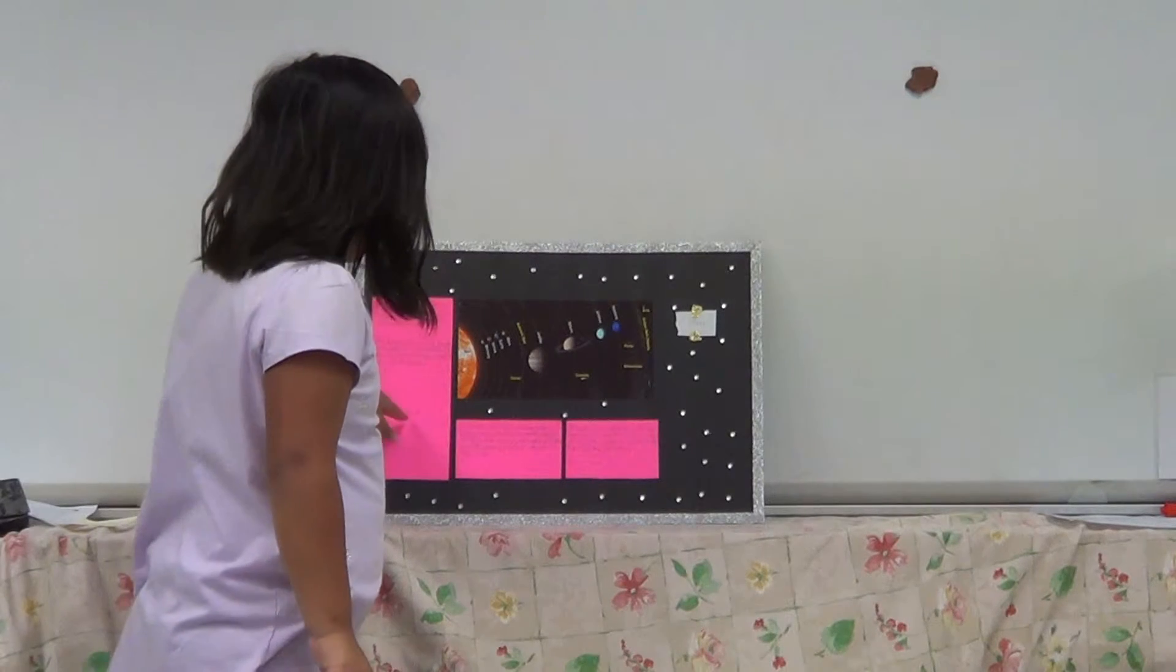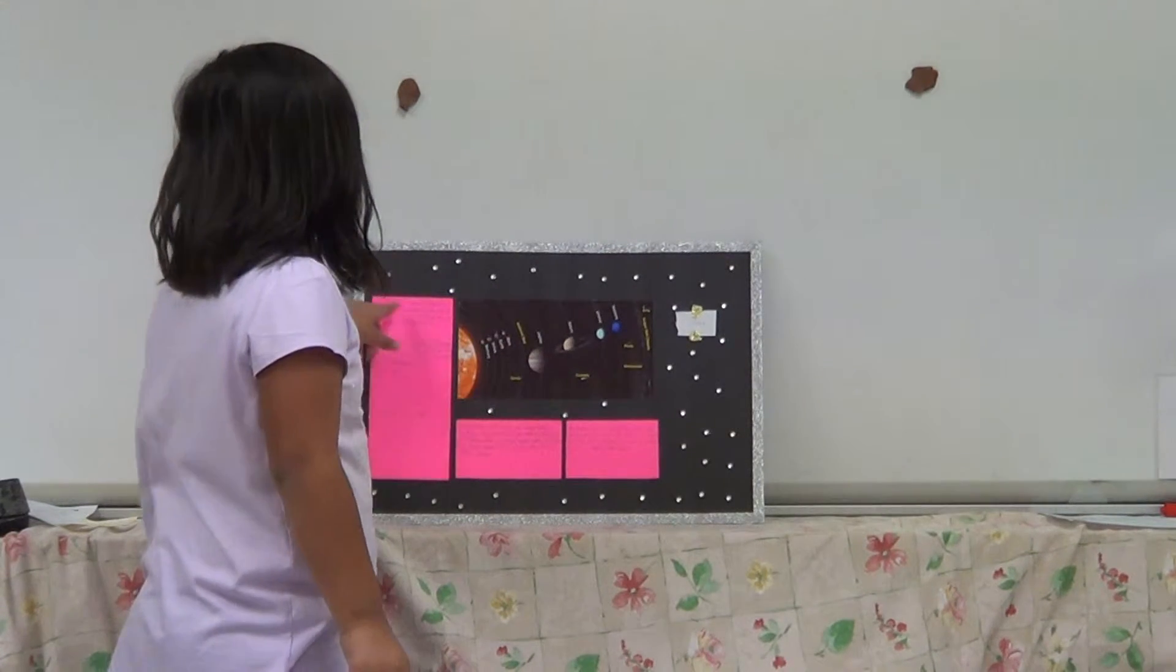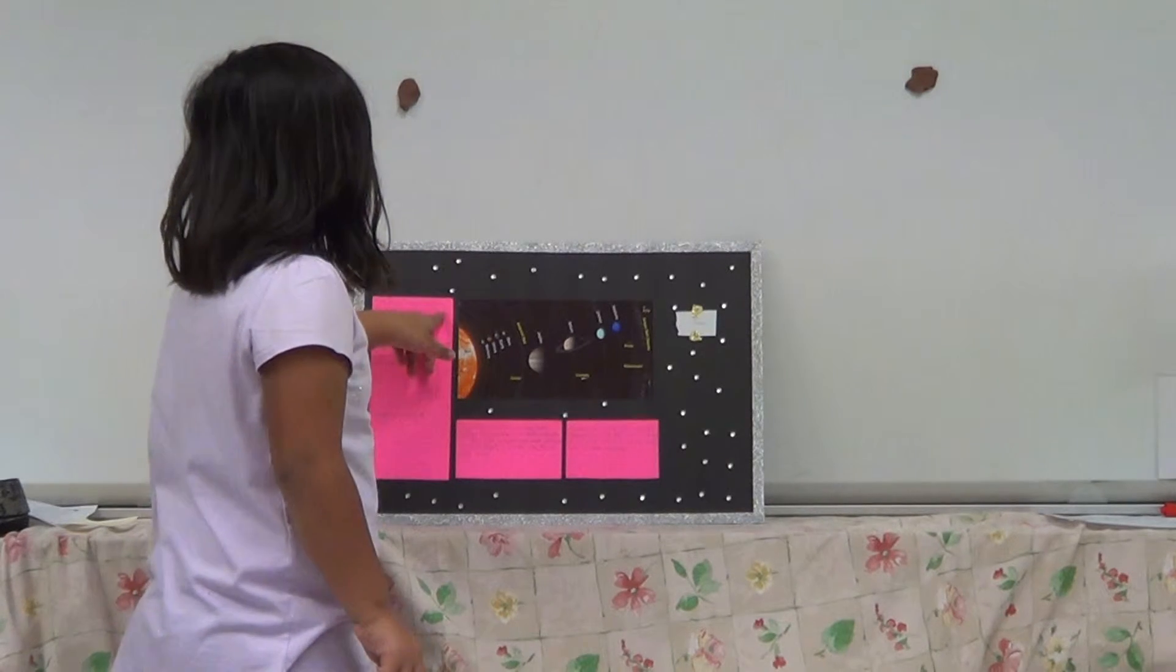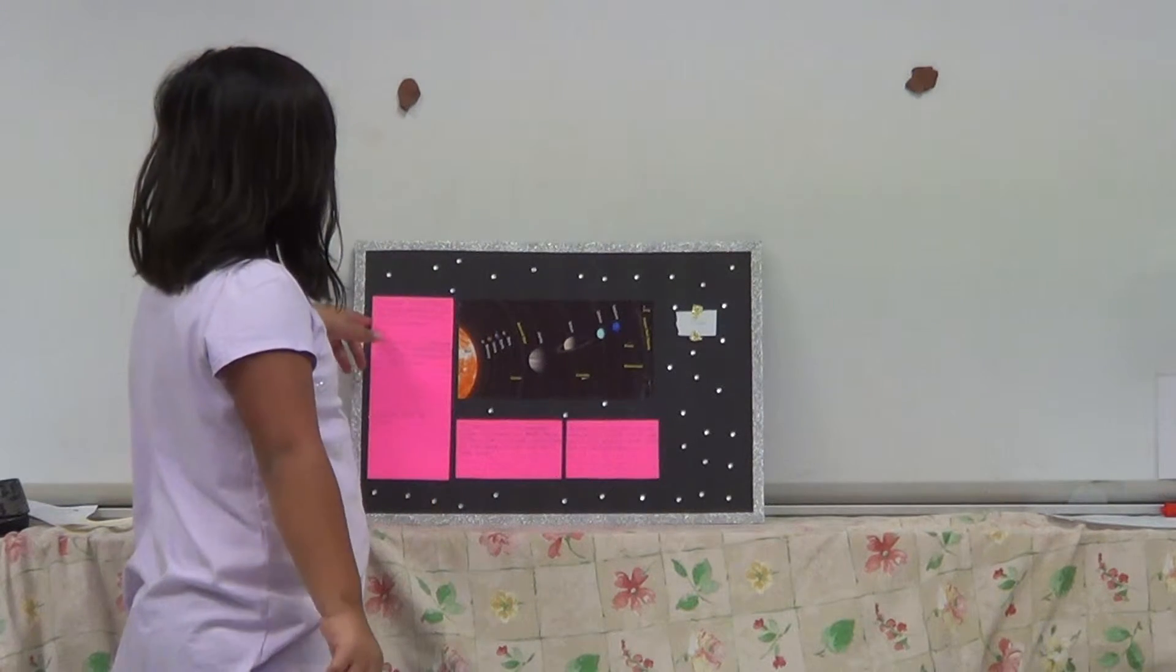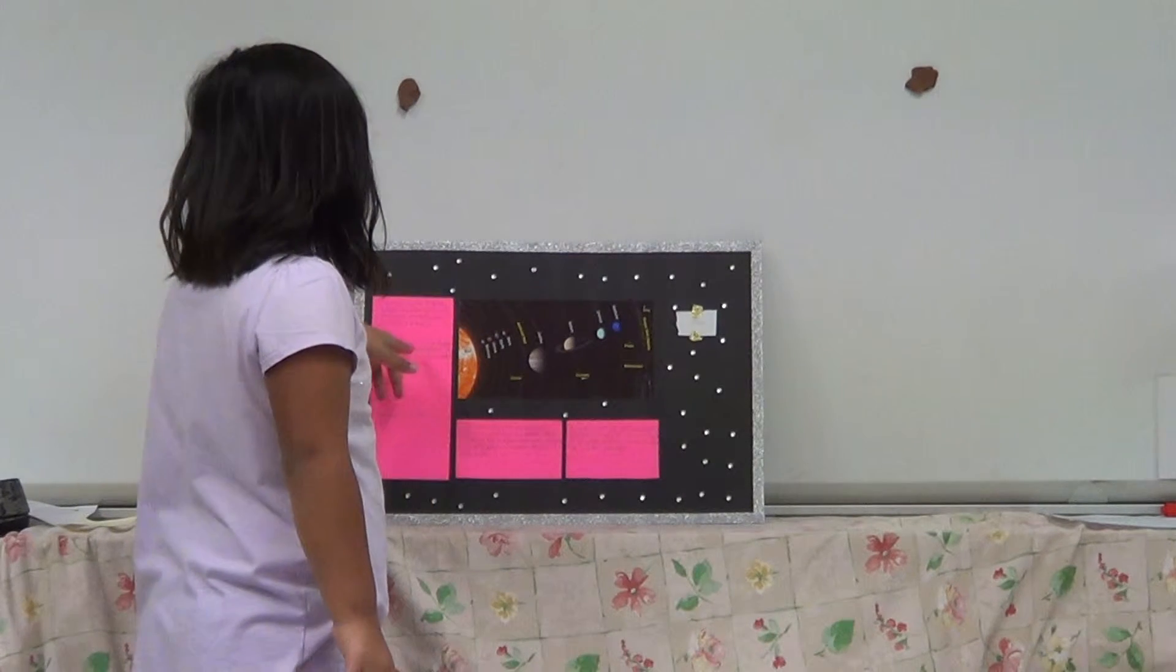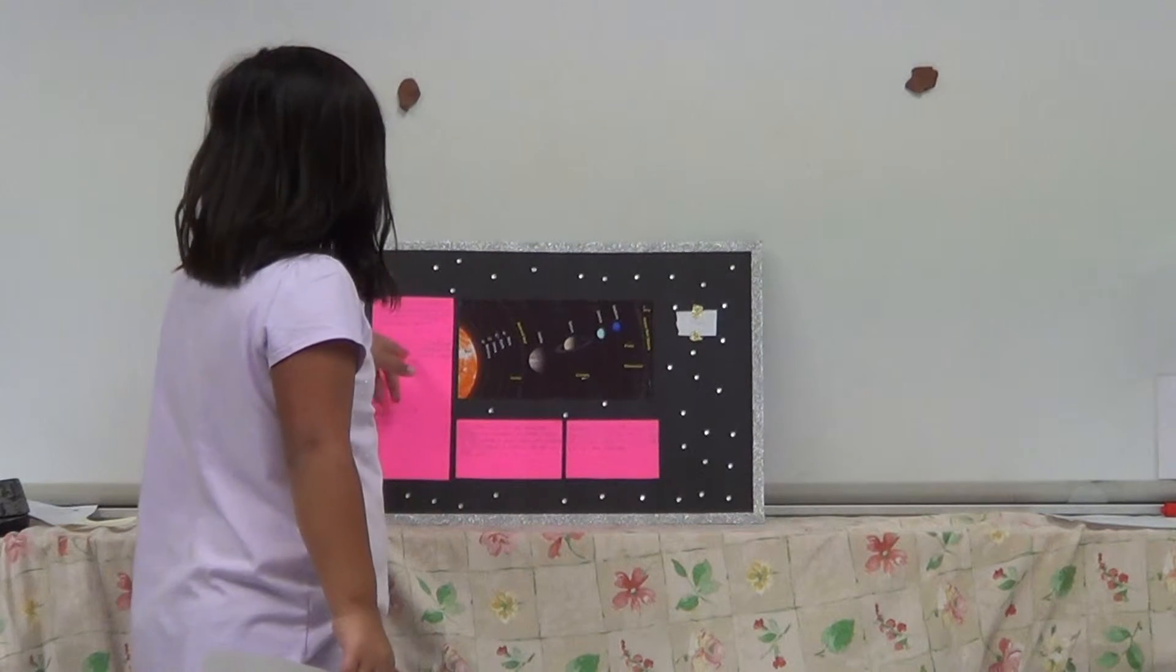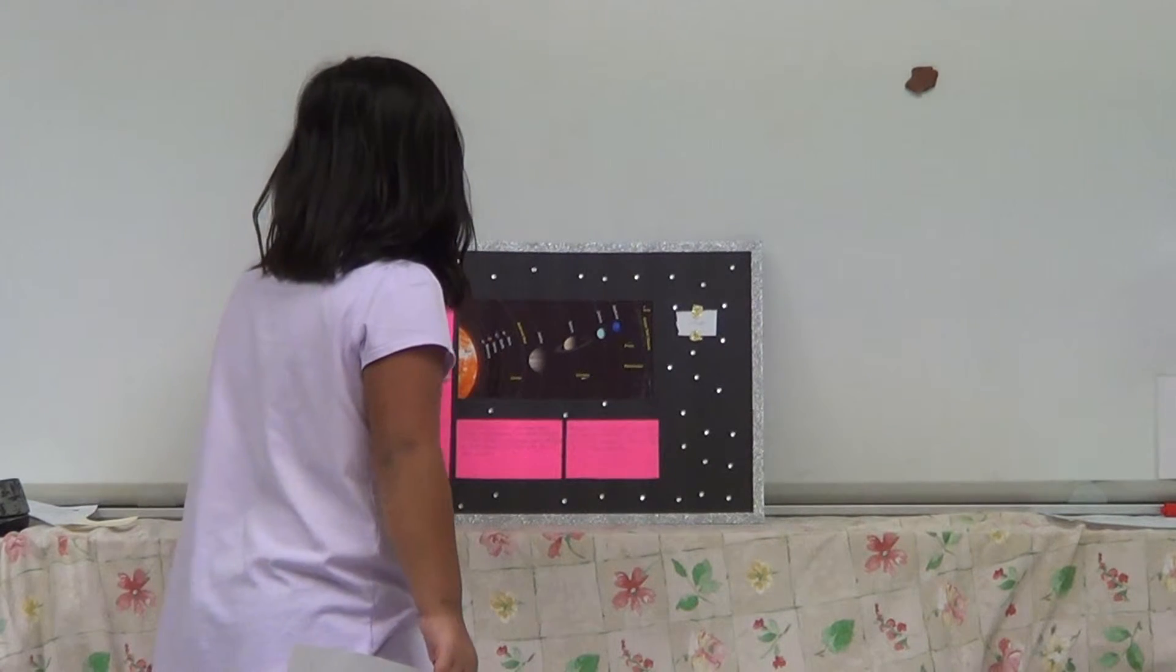Here it talks about the planet's movement. The planet has several types of movements. The most important are the translation, rotation, and precision. The translation is the movement that makes them move around the sun. The rotation is about themselves.